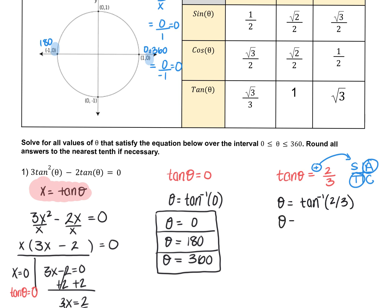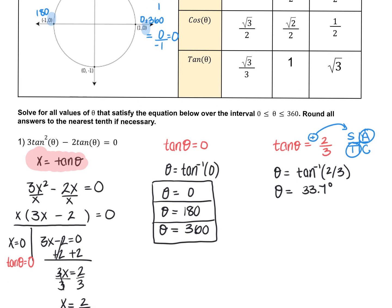Rounding this to the nearest tenth, I get approximately 33.7 degrees. We know the reference angle will always be a quadrant 1 angle. This is my reference angle. We have an angle in quadrant 1, that's what we need. So quadrant 1 is simply 33.7 degrees, and that's one answer.